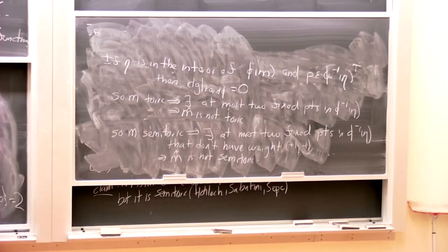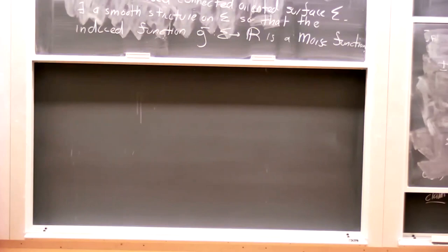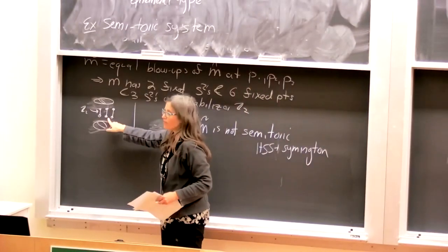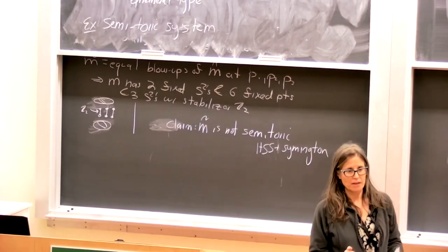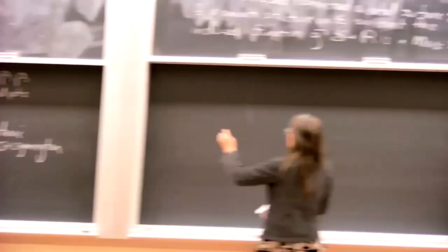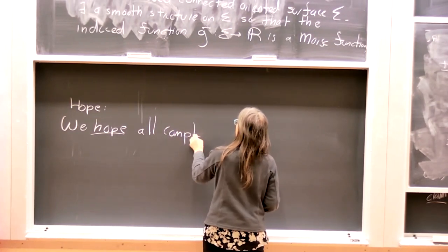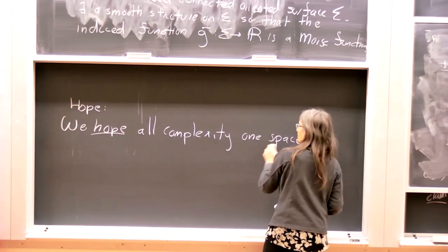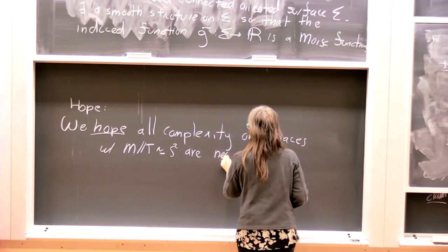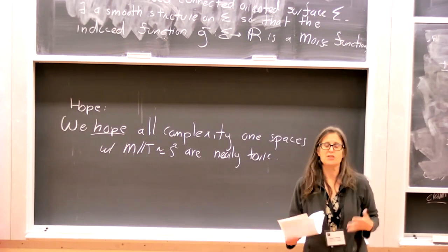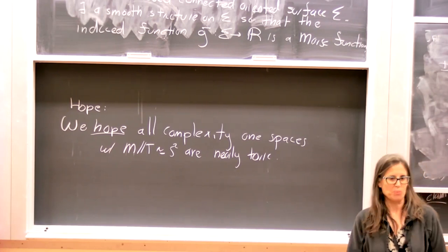And so what does this tell me? If eta is in the interior of phi of M and p is a fixed point, then we always have that it's a critical point. And so fixed points always count against this in the interior. So m toric implies there exists at most two fixed points in the inverse of eta, which tells us that m hat is not toric. So this is how we see that m tilde is not semitoric. So I guess I'm over time, but I will just finish with a hope. We hope all complexity one spaces are near-toric. So we have this whole Morse theory obstruction to these things existing, and this obstruction doesn't work here. Just to be clear, I'm not claiming we proved this, but it's a natural thing to hope.